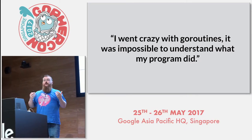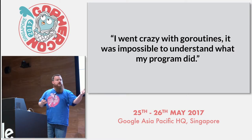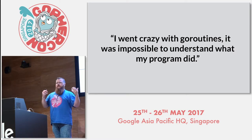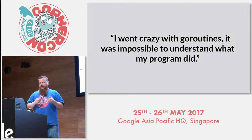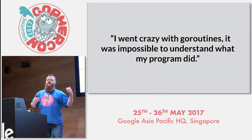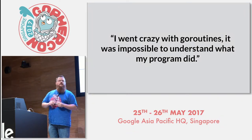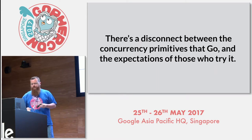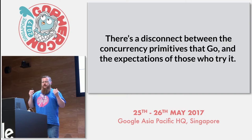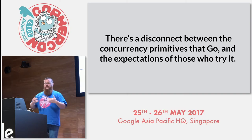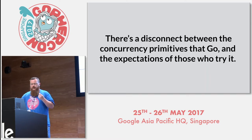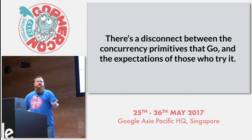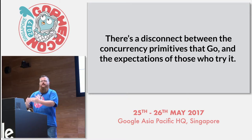If you've learned Go formally — maybe you've taken a training course or studied it in a book — you might have noticed that the concurrency section is usually towards the back. This is certainly true of my own material. So, clearly there's a disconnect between the concurrency primitives that the language offers and the expectations of some, maybe many, who come to the language for exactly those reasons.